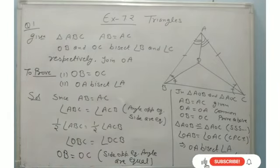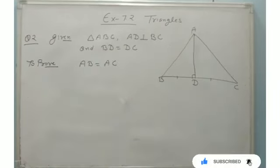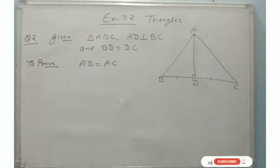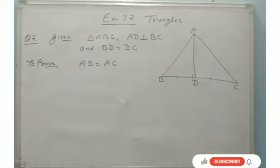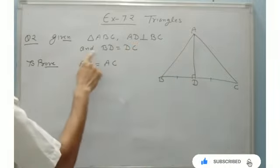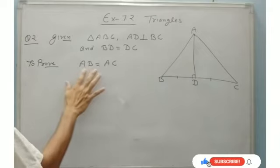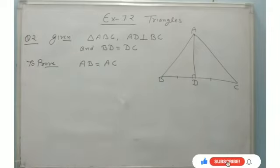Now we will discuss question number 2. It is given in triangle ABC that AD is the perpendicular bisector of BC — perpendicular and bisector. That is why AD is perpendicular to BC, and BD is equal to DC (bisected). We have to prove that triangle ABC is an isosceles triangle. Isosceles means two sides equal, so we have to prove AB is equal to AC.